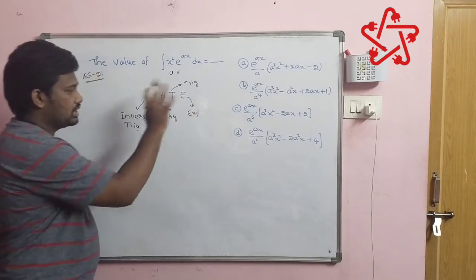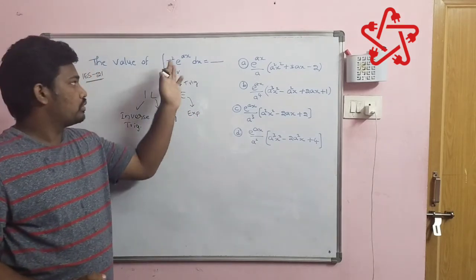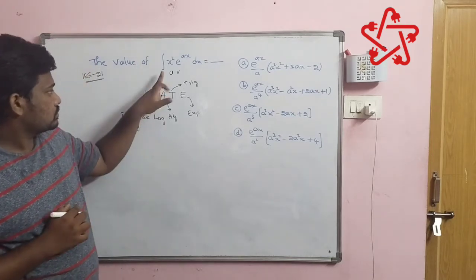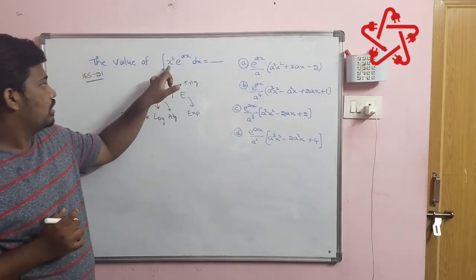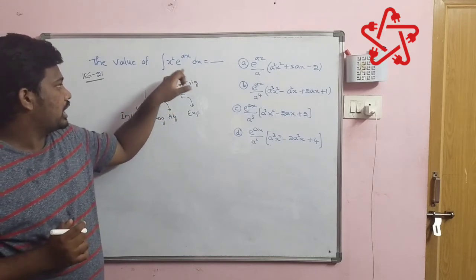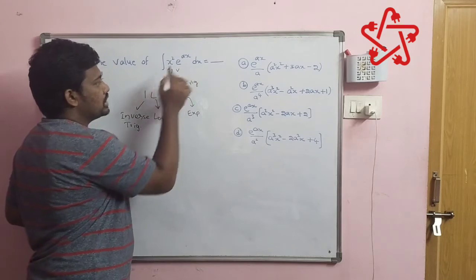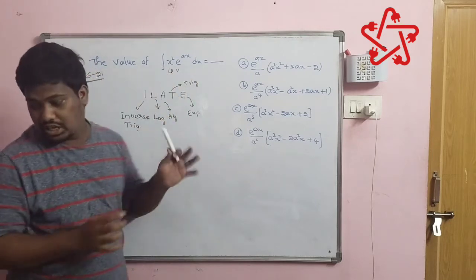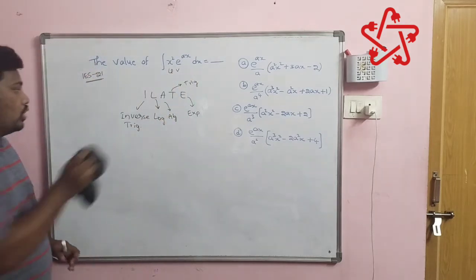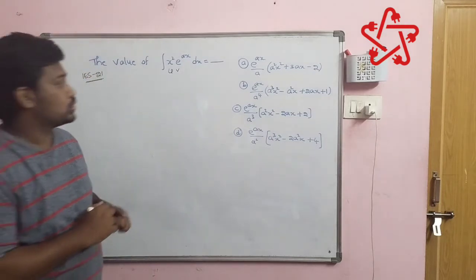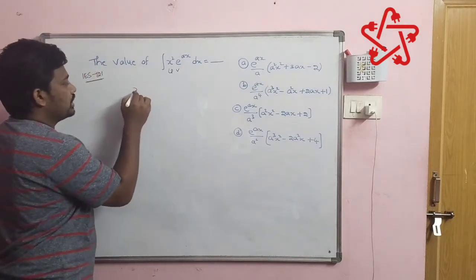If you see here, first it gave algebraic and then exponential, so we wrote correctly. U is x square and v is e power ax. Now after identifying, we should take the u term first, take the v term separately.